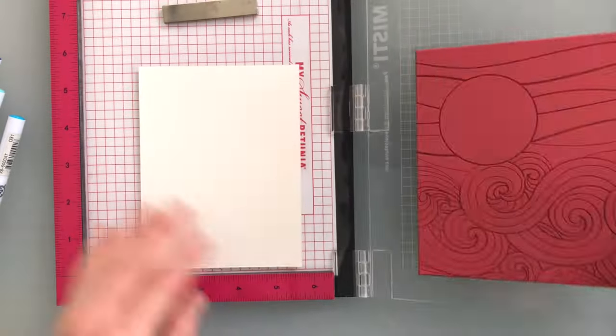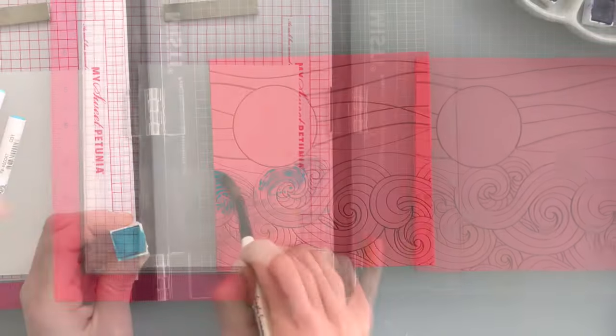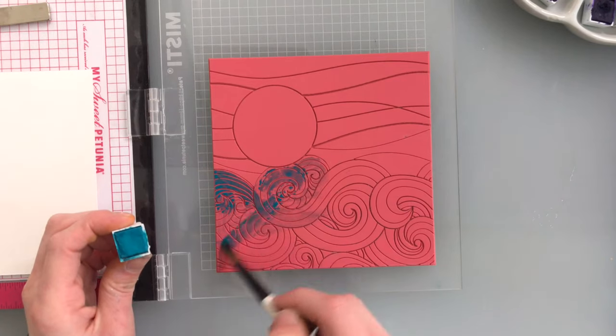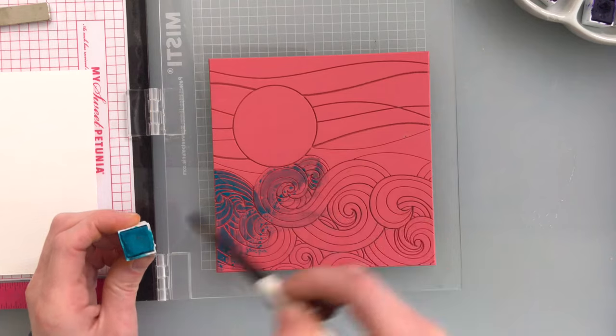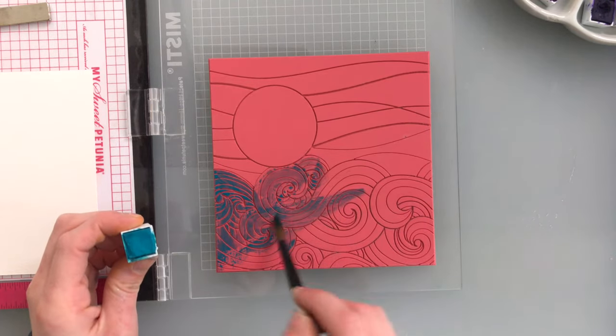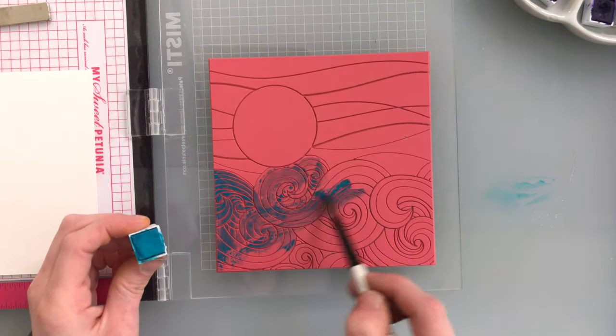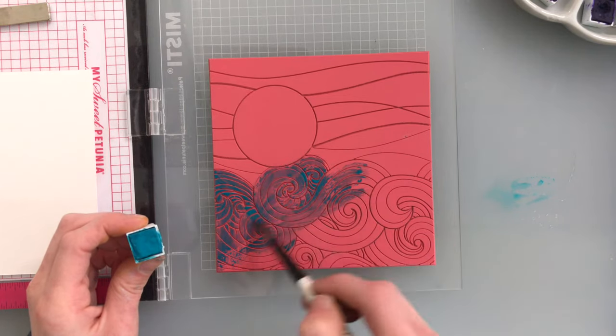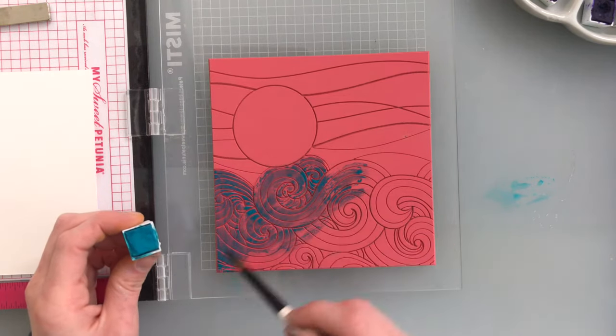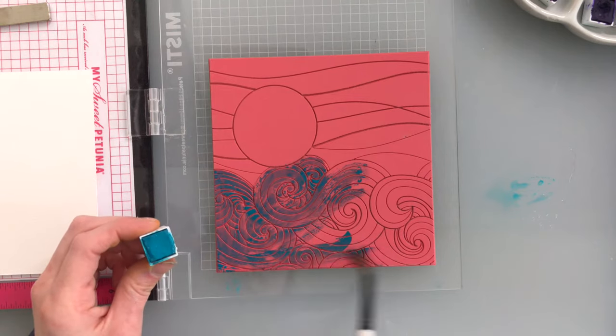This particular technique works best with some background stamps that have a lot of solid areas like this one here. After I put my paper in place, I'm going to bring in some Altenew watercolors. Now you can use any watercolors you like. The key is that you want to go ahead and apply the watercolors onto the stamp, coloring in the areas that you want each color to be. The other thing you want to keep in mind with this technique is to not use a ton of water because you don't want the color to bead up on the surface.